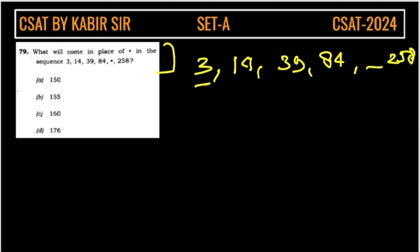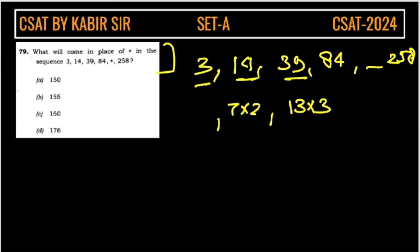You can see here, if you can easily see this is like 7 into 2 and this is 13 into 3. So, this will be what? This will be 3 into 1 we can write and this will be into 4. This is 21 into 4. So, in this way this series will go.